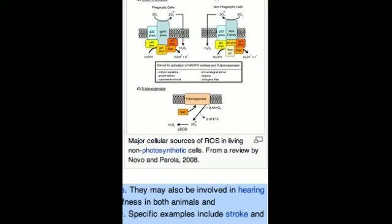However, during times of environmental stress, e.g., UV or heat exposure, ROS levels can increase dramatically. This may result in significant damage to cell structures. Cumulatively, this is known as oxidative stress.